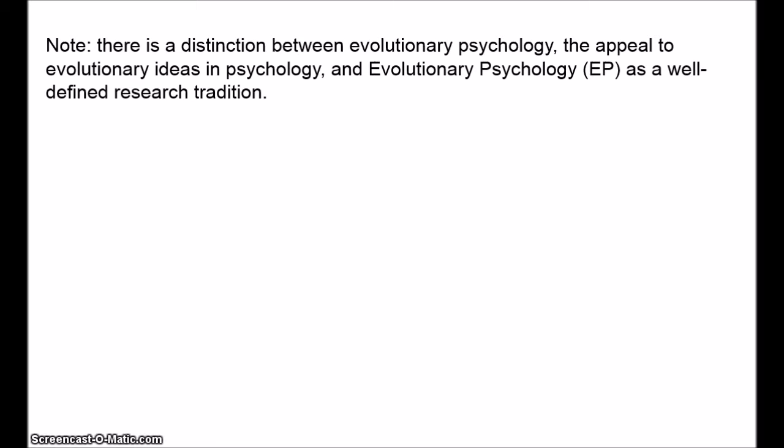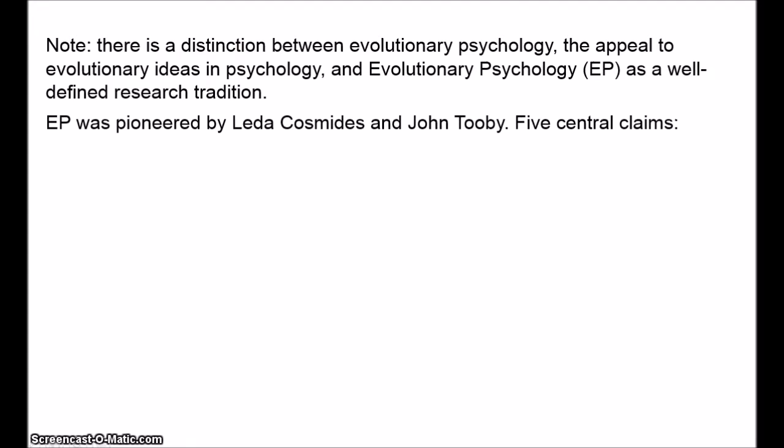Evolutionary psychology as a well-defined theory was pioneered by Leda Cosmides and John Tooby, and this theory really has five central claims.